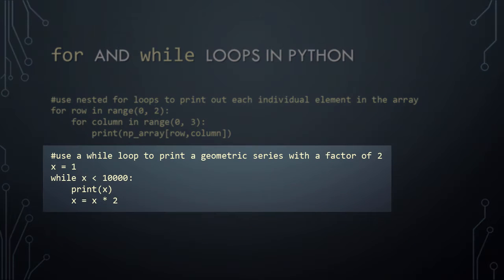This final loop is a while loop. The control variable is called x, the value of which is initially set to 1. The loop will keep running as long as the value of x is less than 10,000. This means that we must adjust the value of x inside the while loop, or else the loop will run forever. Each time the loop runs, the current value of x is printed to the screen, and then x is set equal to itself multiplied by 2. Once the value of x exceeds 10,000, the loop will stop running.